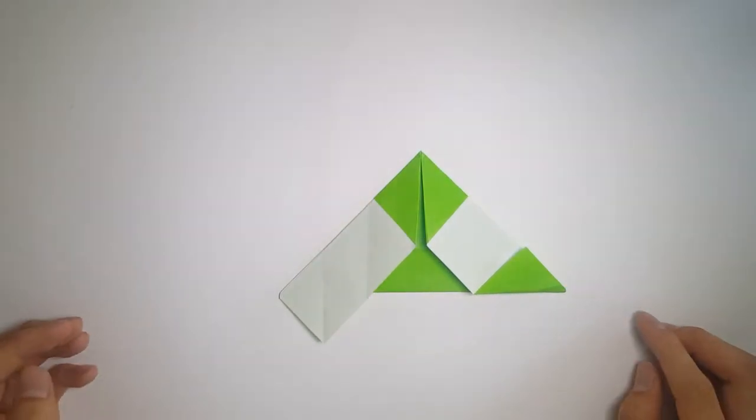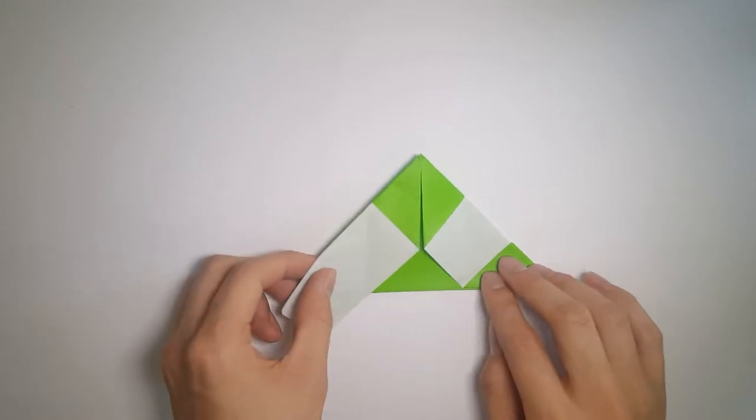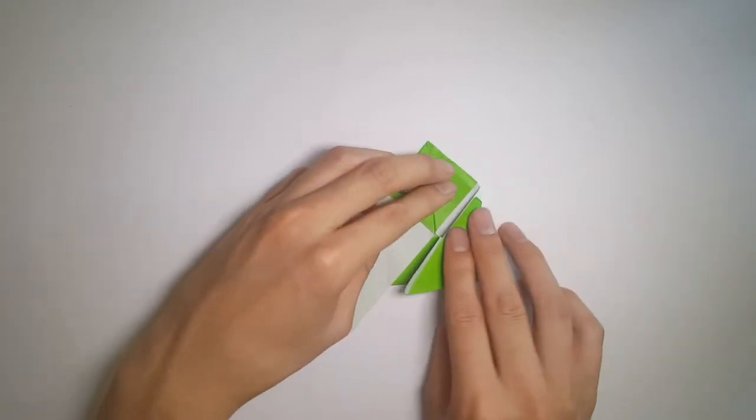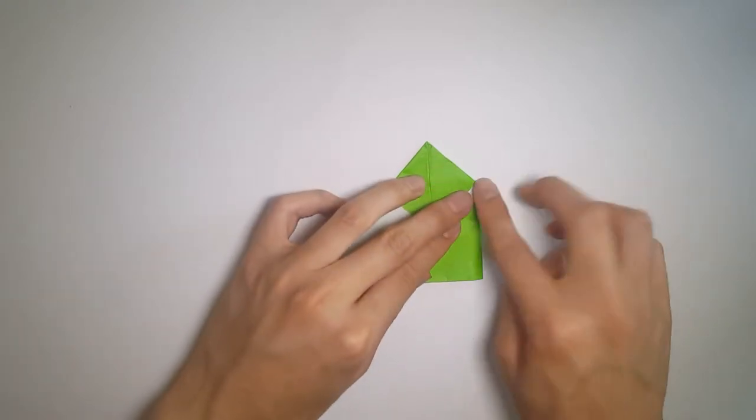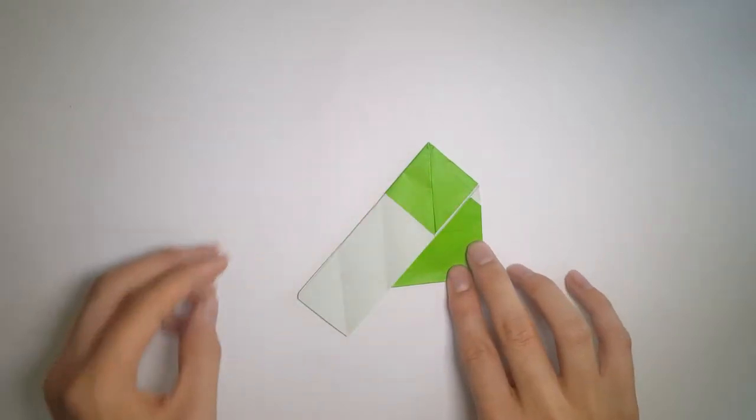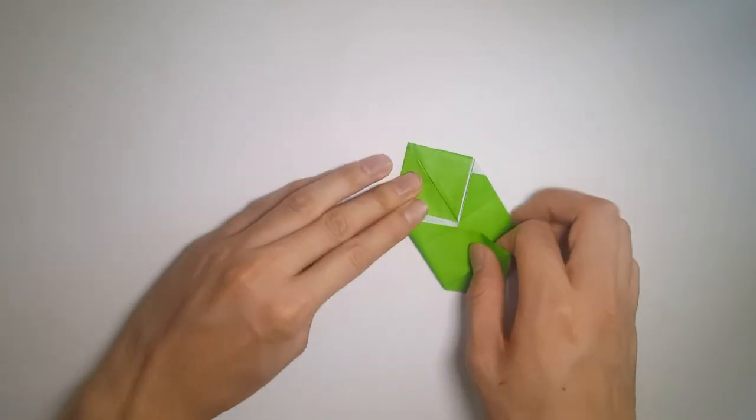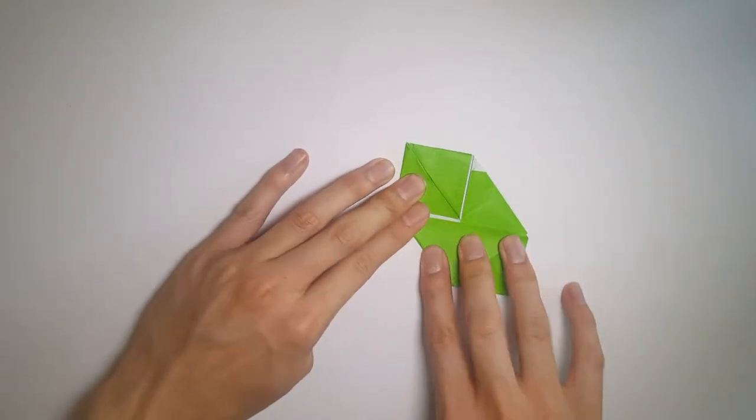Now we want to fold the right side inside following the crease, like so, and we'll do the same with the left side. Now we'll unfold only that side.